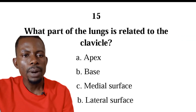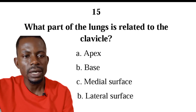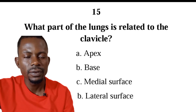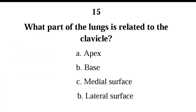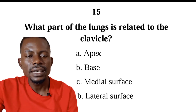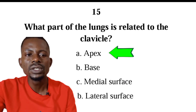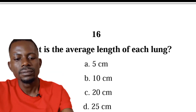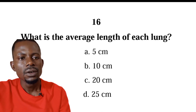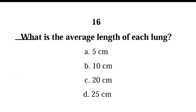Number fifteen: what part of the lungs is related to the clavicle? We have apex, base, medial surface, or lateral surface. The correct answer is A — the apex of the lungs is the closest part to the clavicle. Number sixteen: what is the average length of each lung? Is it 5, 10, 20, or 25 centimeters? The correct answer is D, 25 centimeters. The length of each lung is about 24 to 27 centimeters.